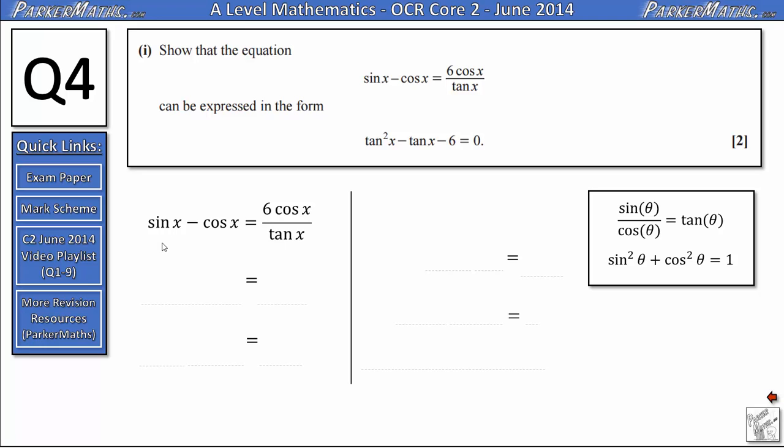On the left hand side that means we'll get (sin x - cos x)/cos x. And on the right hand side dividing by cos x will cancel out this cos x on the top of the fraction leaving us with 6/(tan x). On the next line I'm going to leave the right hand side the same but I'm going to separate out this fraction into two separate fractions. One with sin x/cos x and on the other side we're going to have subtract cos x/cos x.